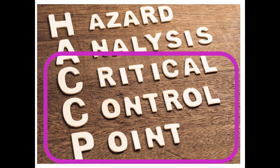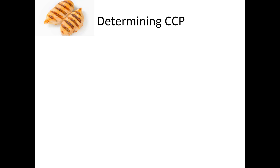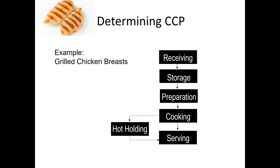But what is a CCP? Well, let's look at how you determine a critical control point in a food processing situation. For example, if you are in a restaurant and one of the food activities that you're involved in is grilling chicken breasts, there is a flow that you will follow.